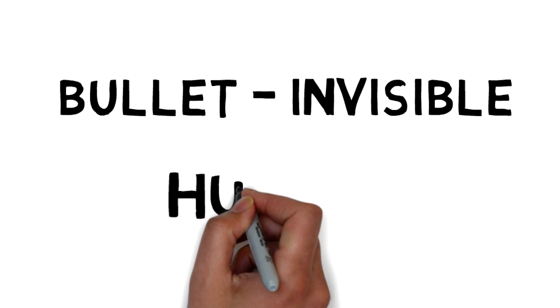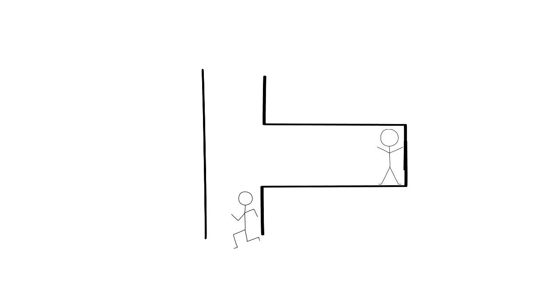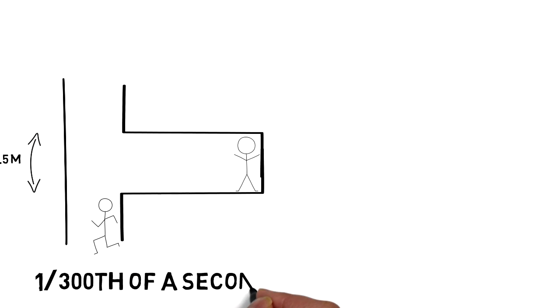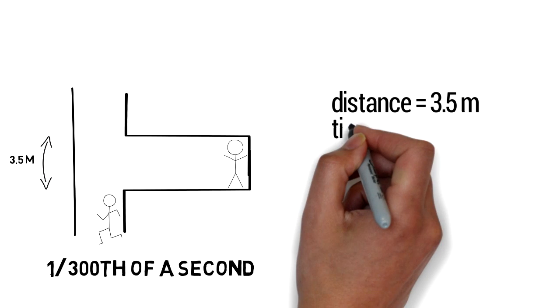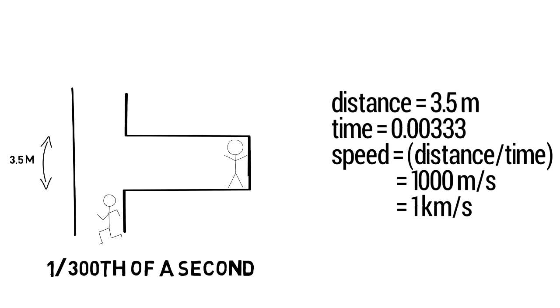Now that we understand that a bullet can become invisible, the real question is can a human become invisible? Let us consider the following scenario. Your friend is standing in the corridor and you want to run very fast so that you become invisible to your friend. Let us assume that the width of the corridor is 3.5 meters. The article in reference one says that tests with air force pilots have shown that they could identify the plane on a flashed picture that was flashed only for one by two hundred and twentieth of a second. So you will have to move across the corridor faster than that. Let us take one by three hundredth of a second, and if you do the calculations, you will end up with a speed approximately equal to ten to the power three meters per second, which is one kilometer per second.